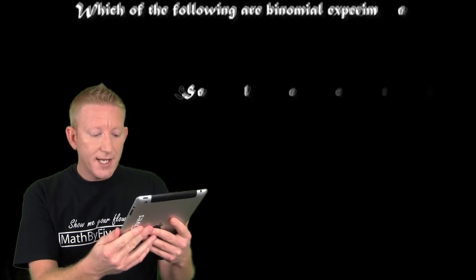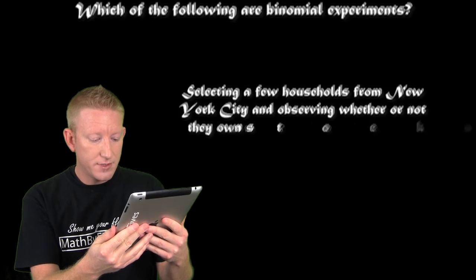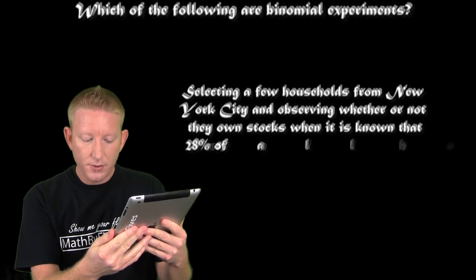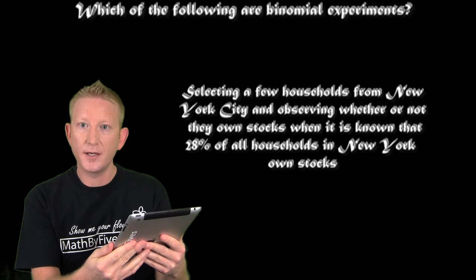The next example: selecting a few households from New York City and observing whether or not they own stocks, when it is known that 28% of households in New York City own stocks.